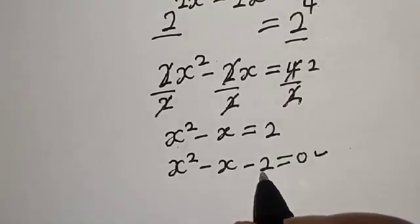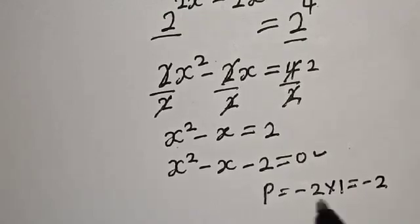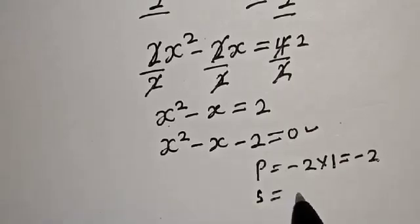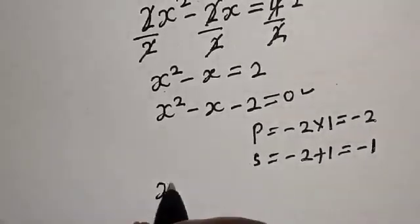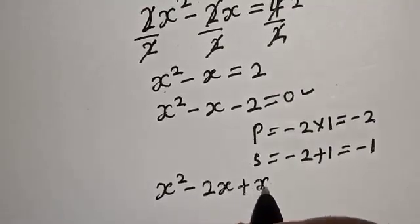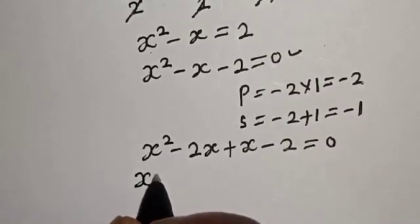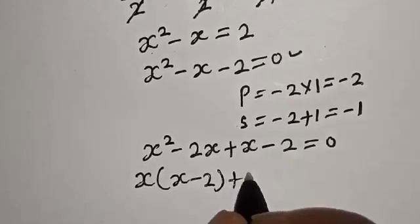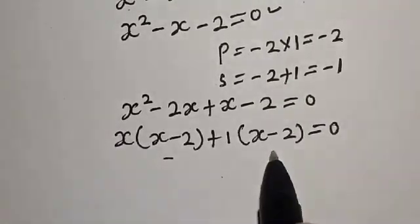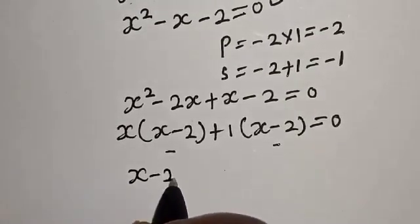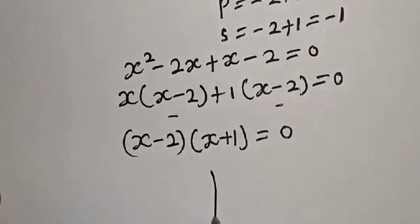We solve using the factorization method. The product is minus 2 times 1 equals minus 2, and the sum of coefficients is minus 1. We find minus 2 plus 1 equals minus 1. The equation becomes s squared minus 2s plus s minus 2 equals 0, which factors as s(s minus 2) plus 1(s minus 2) equals 0, giving (s minus 2)(s plus 1) equals 0.